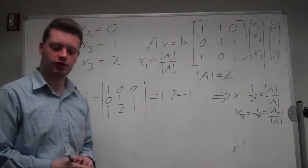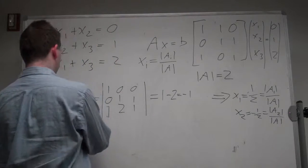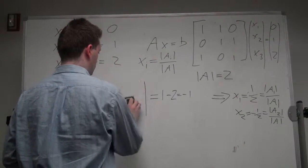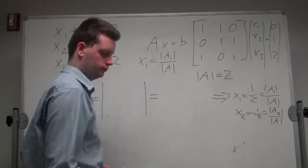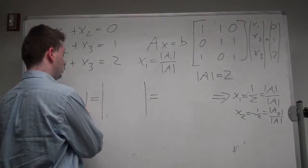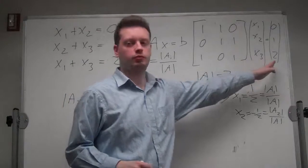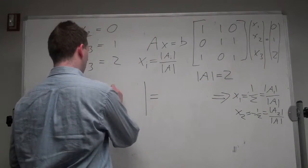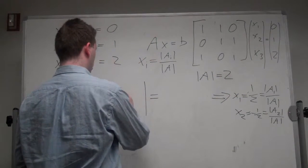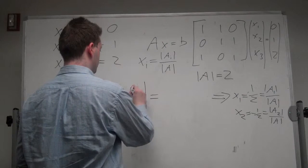And lastly, for x3, we replace the third column by this b-vector and we get 1, 0, 1; 1, 1, 0; 0, 1, 2.